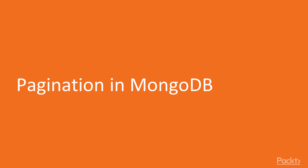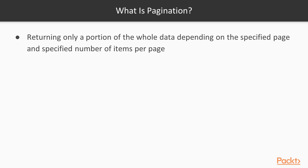Let's start with the first video, which is about pagination in MongoDB. In this video, we will cover the advantages and the definition of pagination in MongoDB, and in the next one, we will dive into the source code. So what is pagination? Pagination means that we are returning only a portion of the whole data depending on the specified page and specified number of items per page.